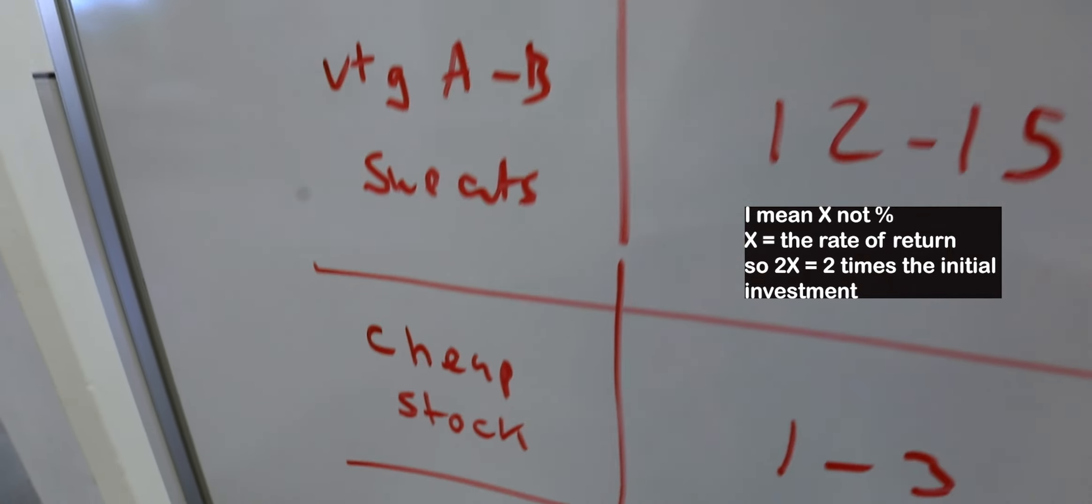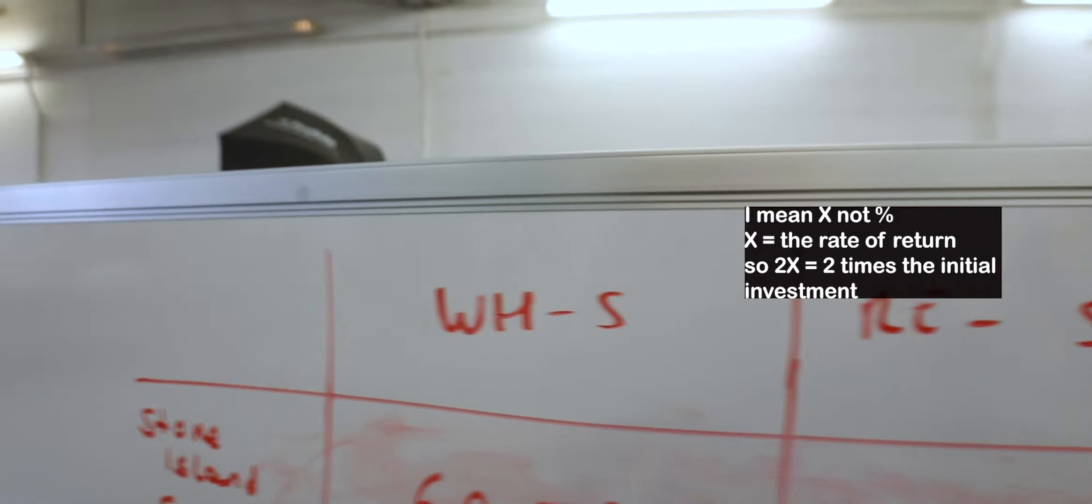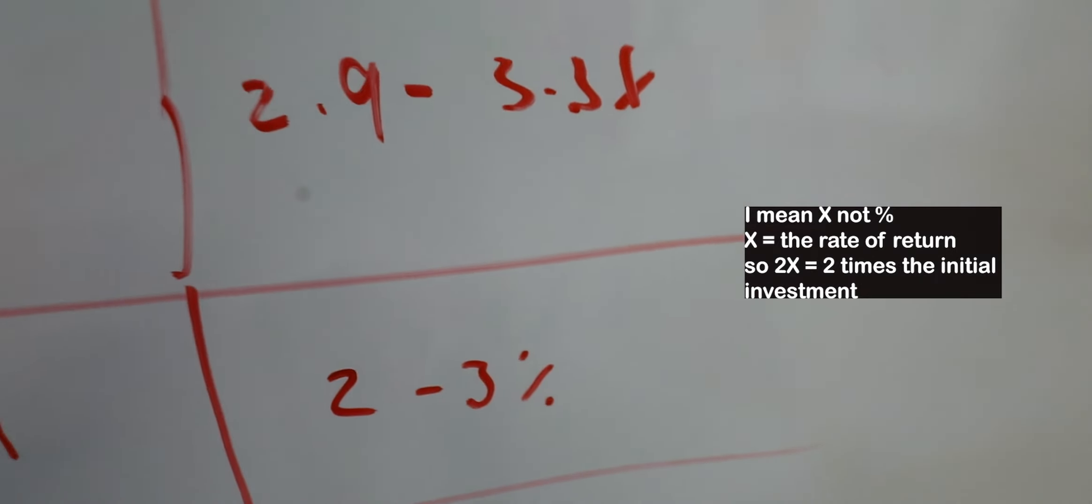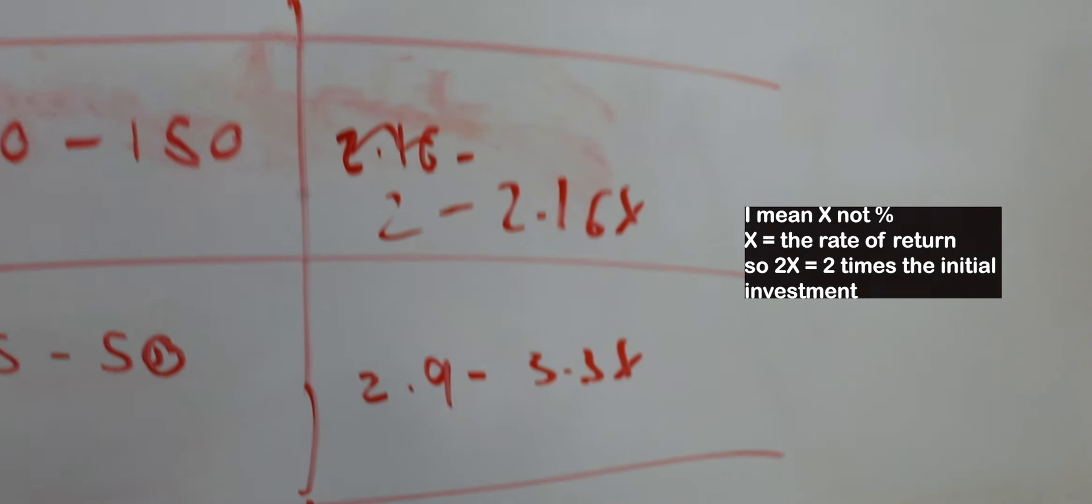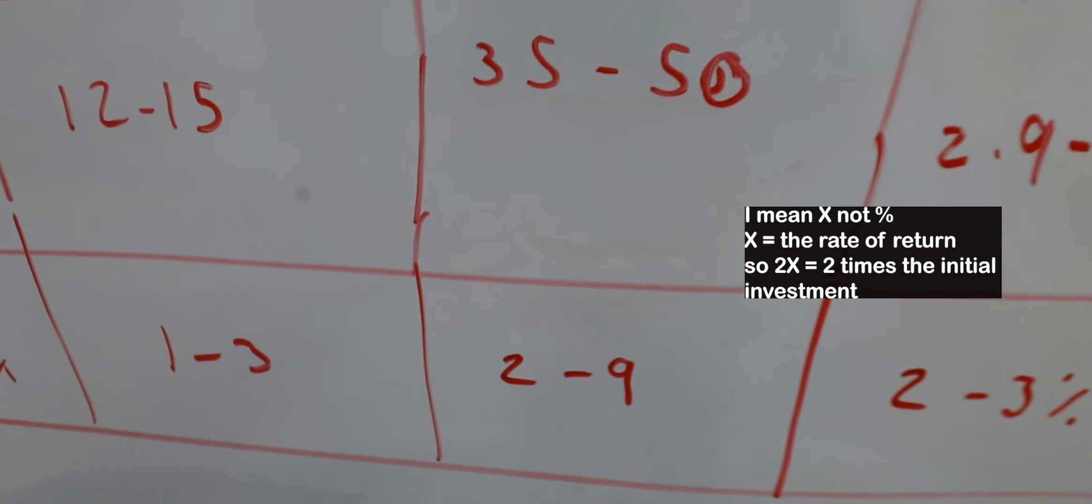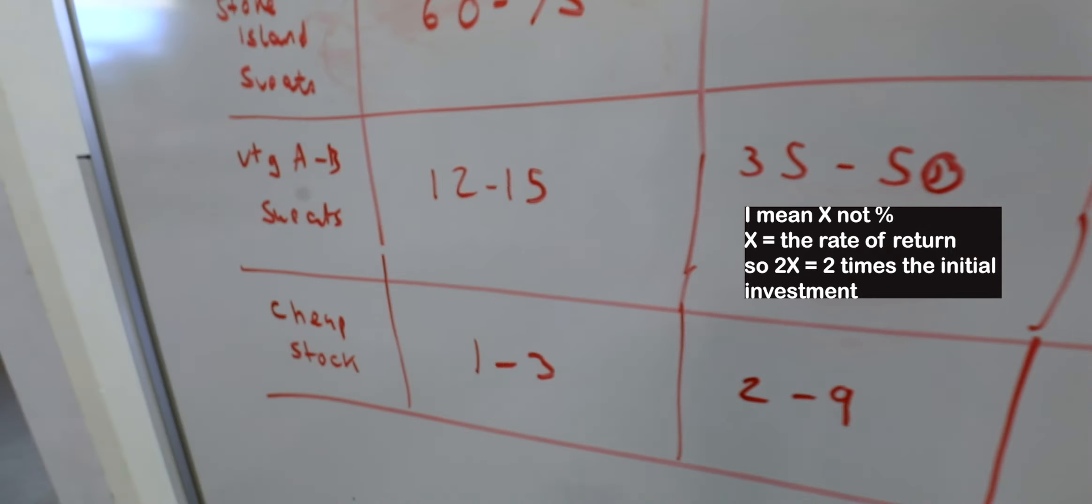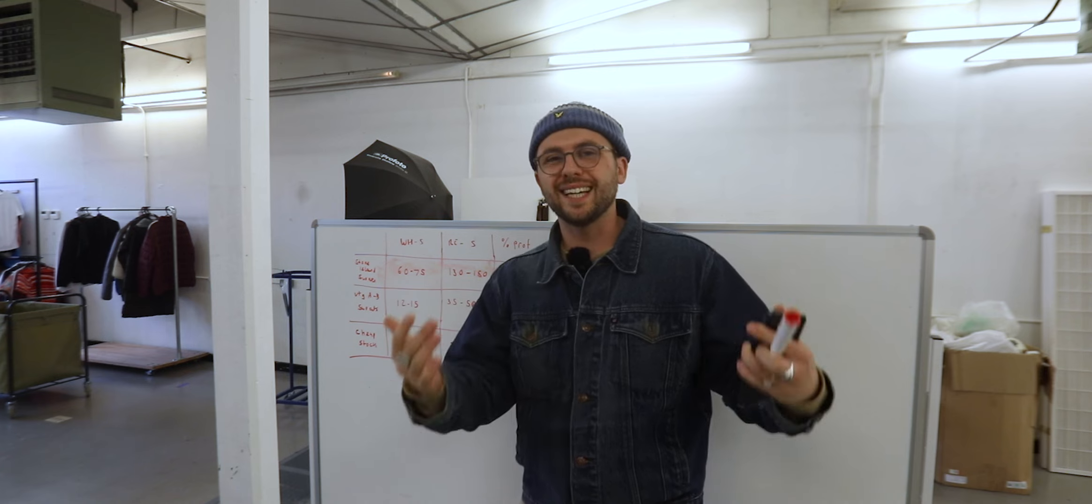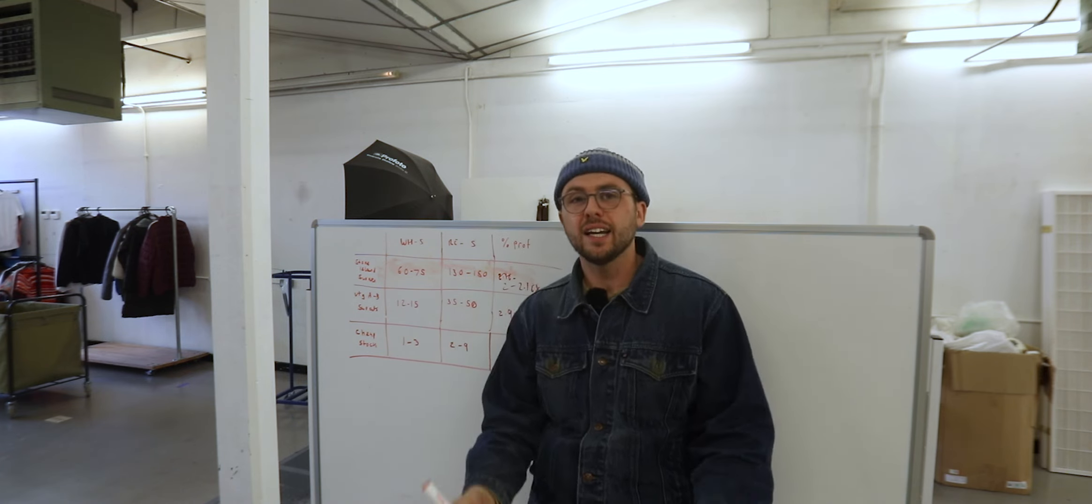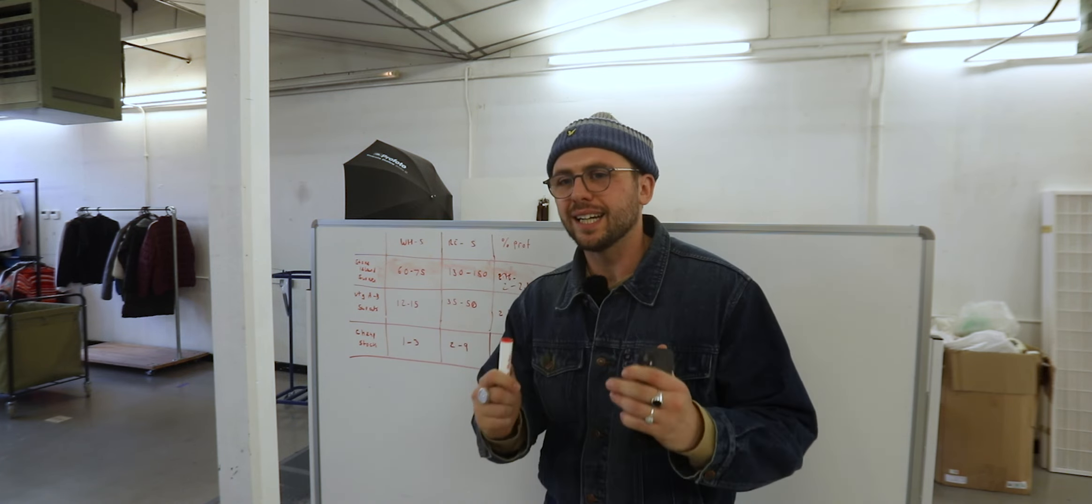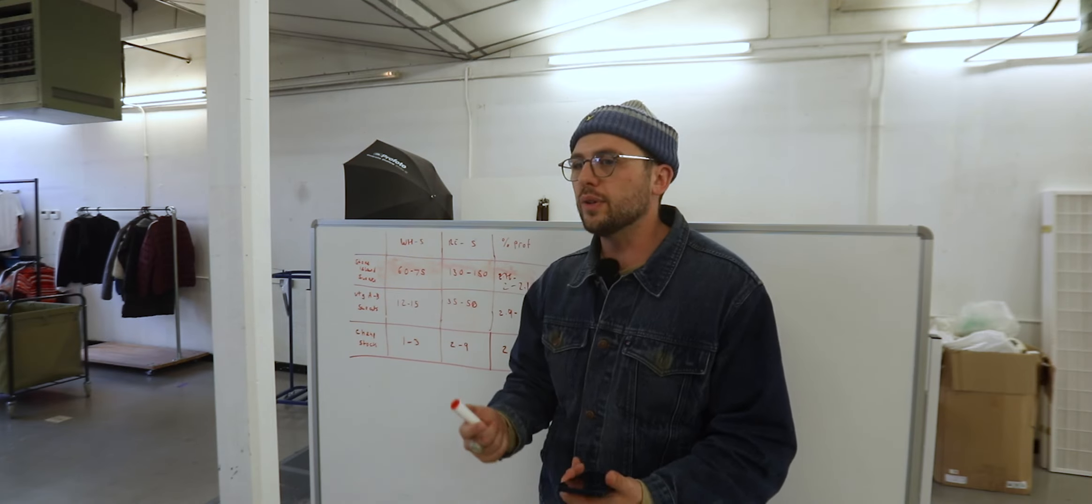Now, if we've got cheap stock at £1 to £3 and the percentage profit we want to aim for is 2 to 3, the same as all these, then we have to sell them for £2 to £9 each. Now, I do hope there's some part of this that is sinking in in a positive way. I know what you're saying. Sven, I have no idea where to get any of this stuff from, mate.